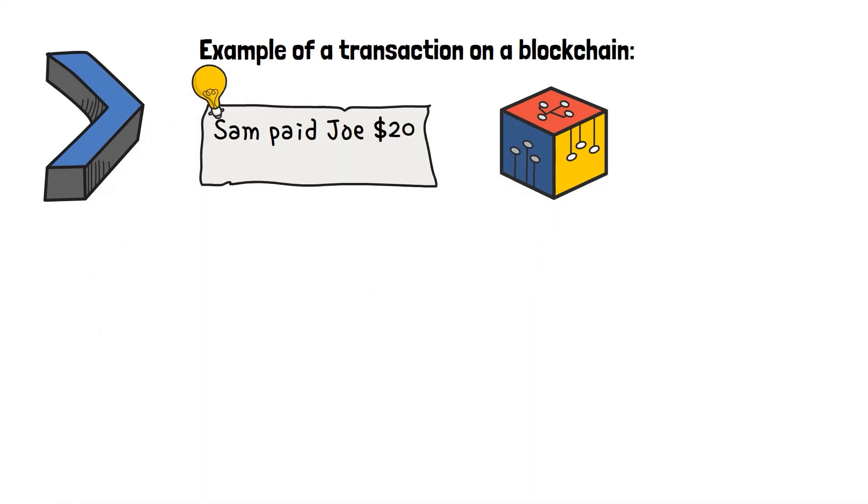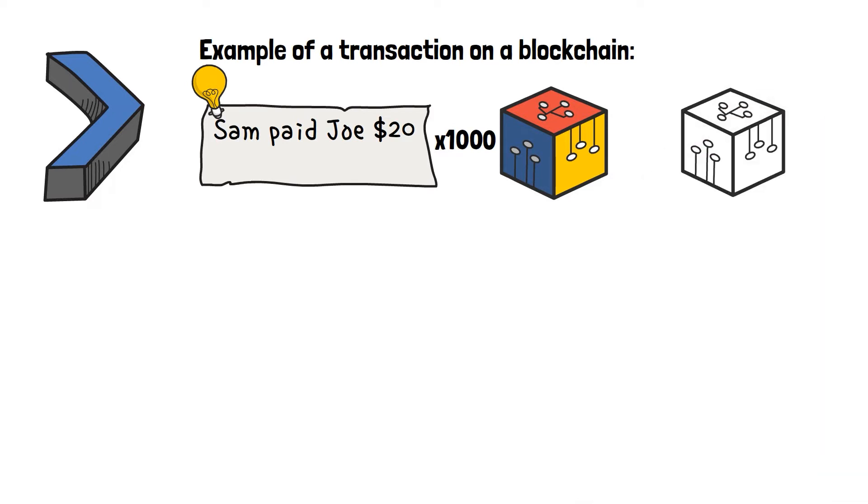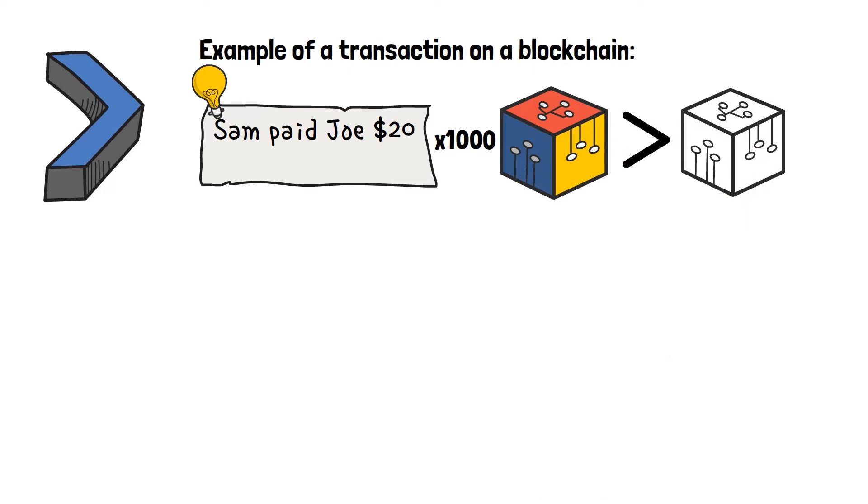Well, a single block can store hundreds or even thousands of transactions. The capacity depends on the individual blockchains, but newer ones can usually store many more transactions than their older iterations.